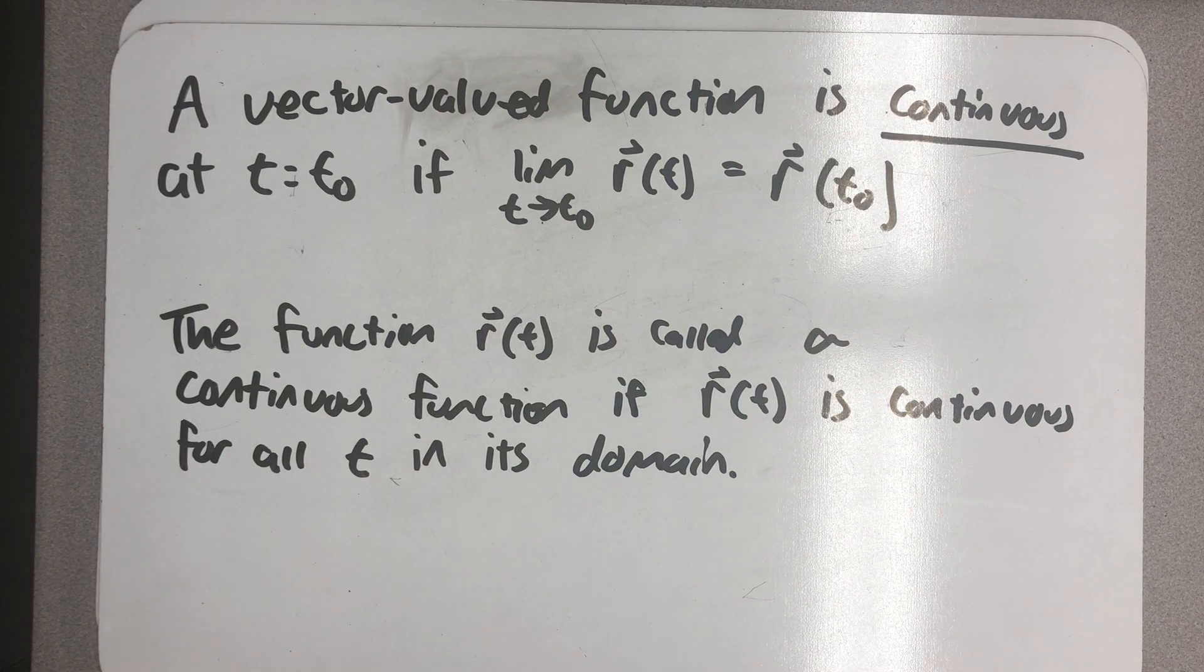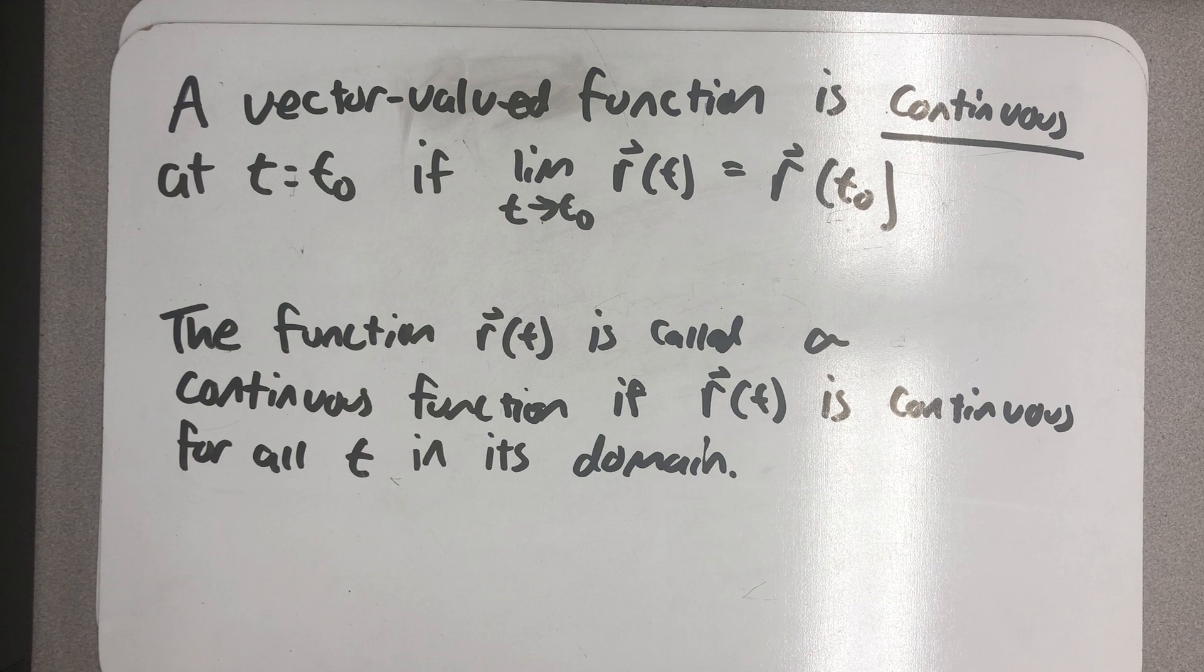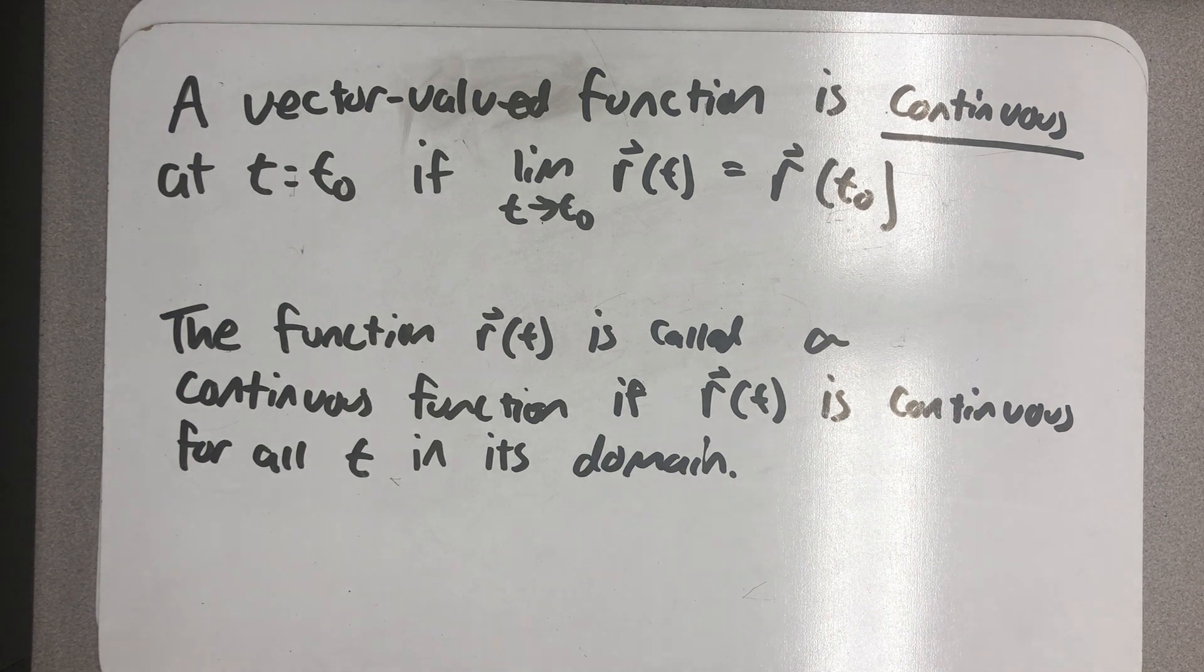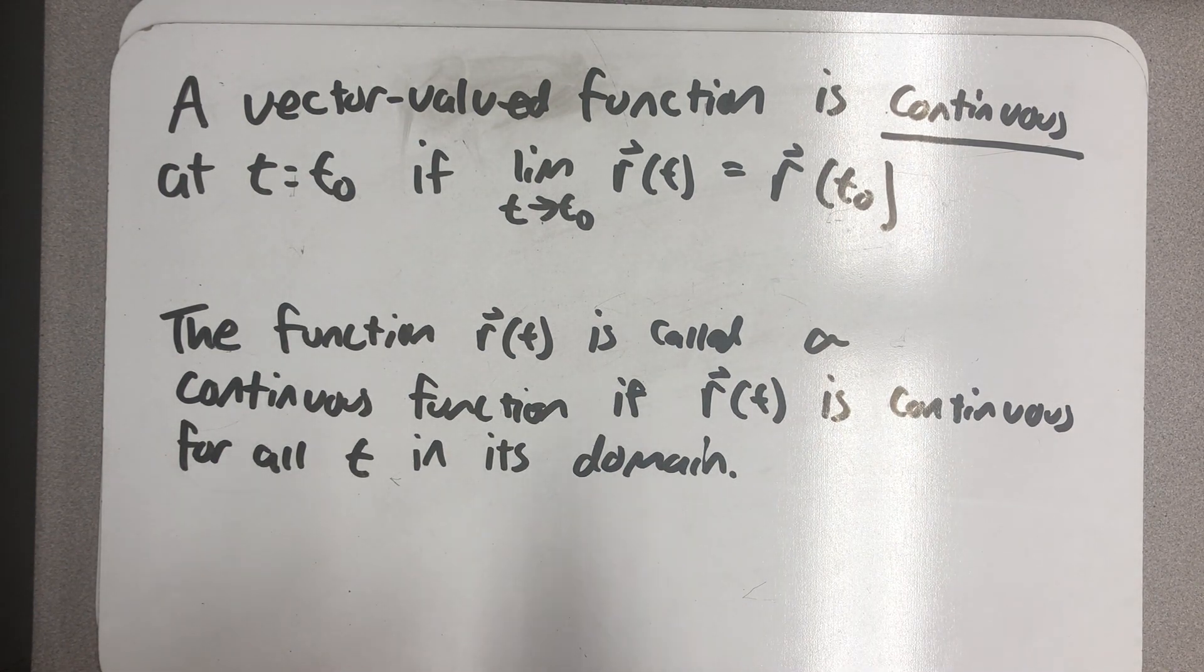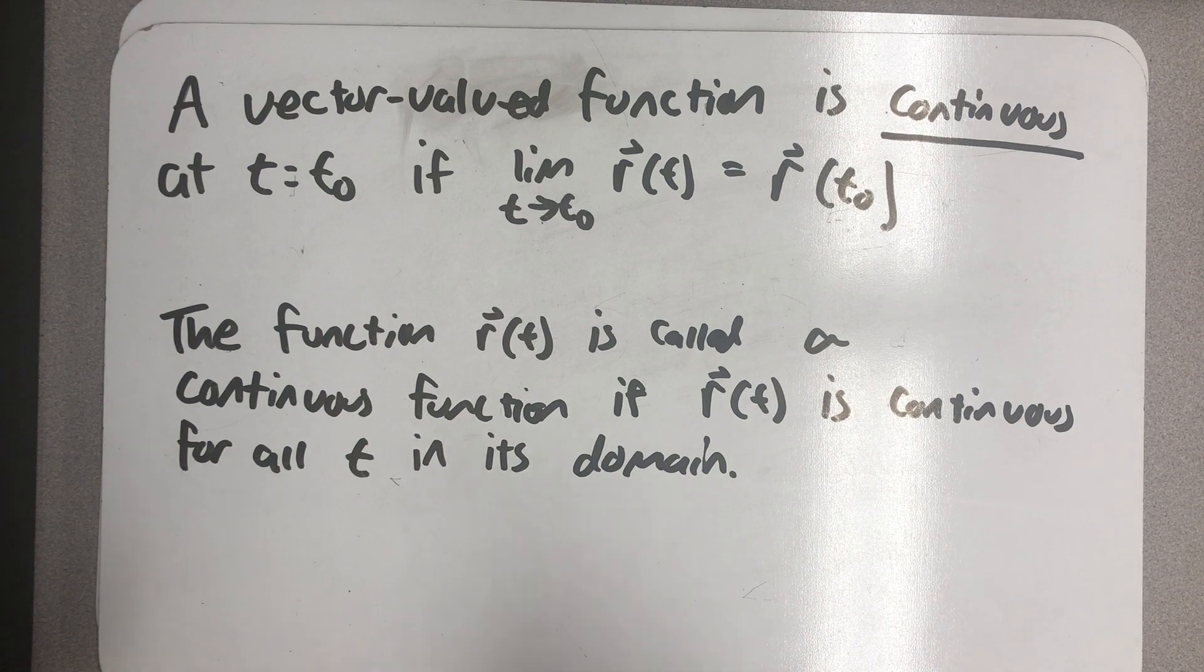A vector valued function is continuous at t equals t-naught if the limit as t approaches t-naught of r of t is equal to r of t-naught. This is really no different than our definition of continuity from calc 1.